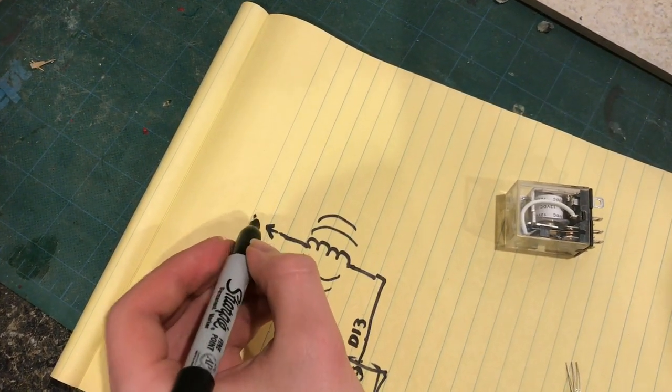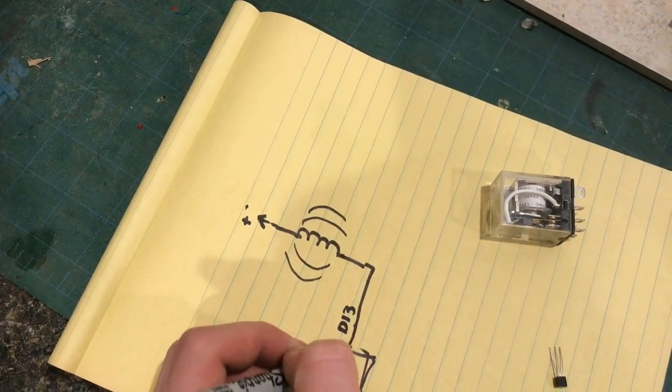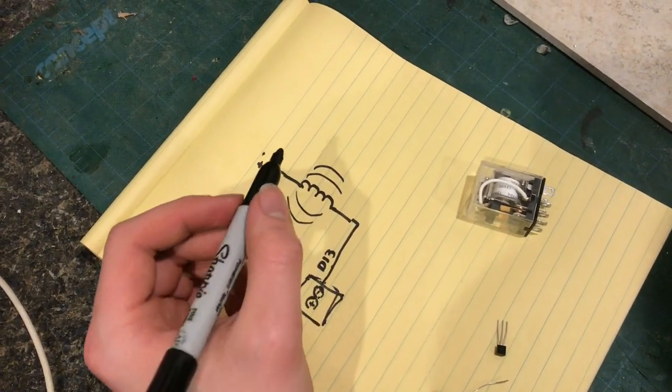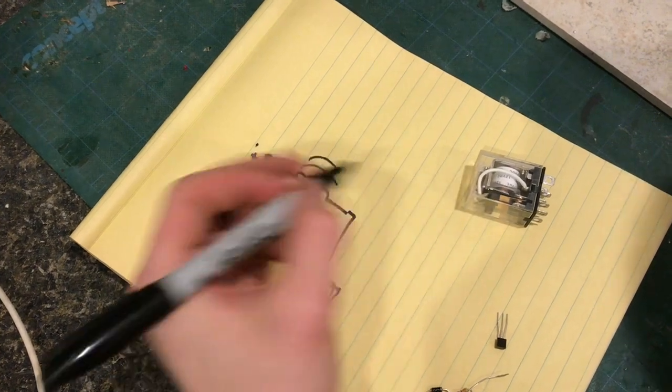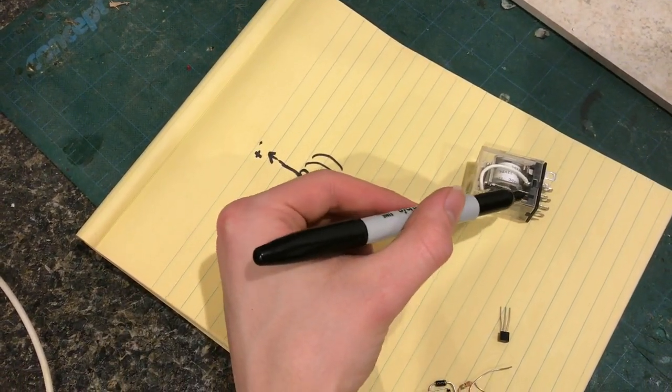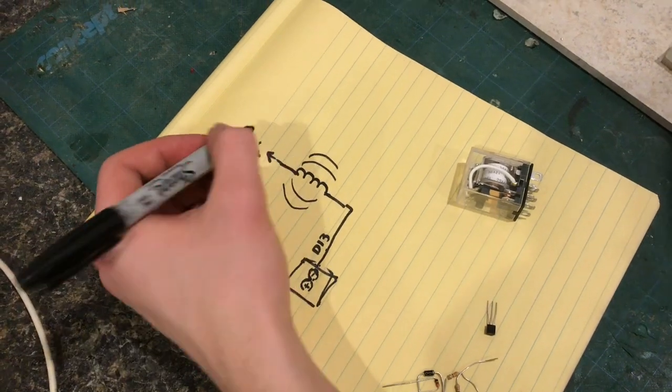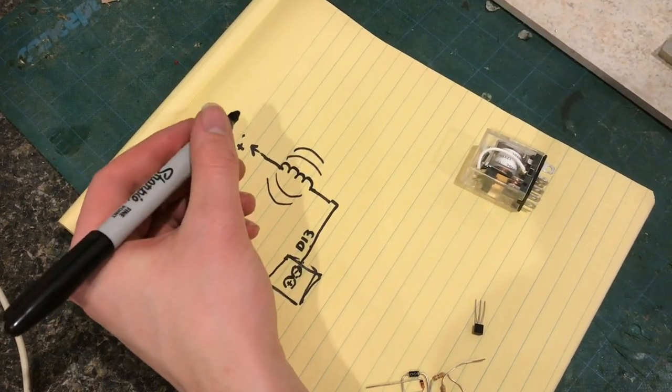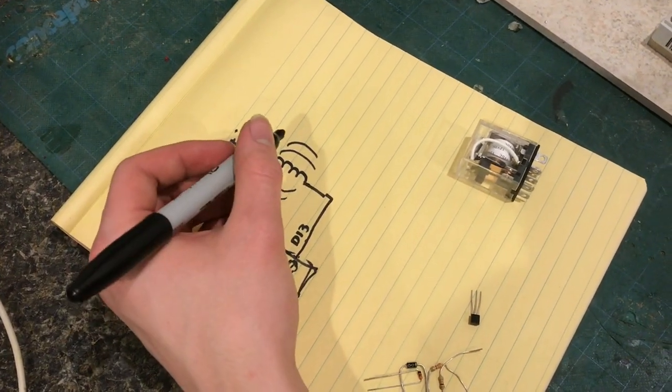If you try to drive it from 5 volts you will find that the 20 milliamps from the Arduino is nowhere near sufficient and it will not activate the magnetic field strong enough to switch the relay. So this guy is rated for 12 volts and you're gonna need maybe 50 milliamps to turn this thing on and off.